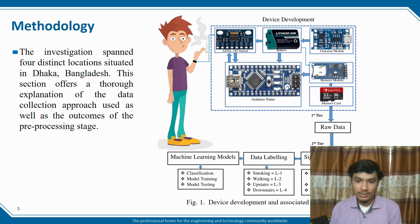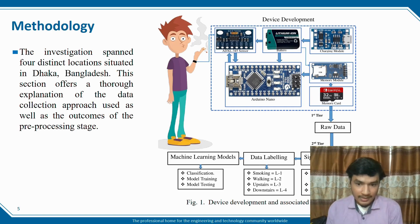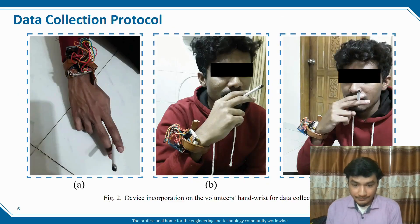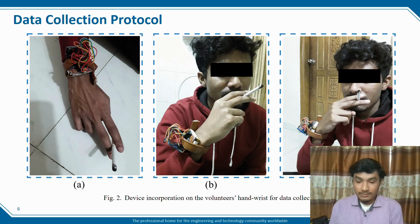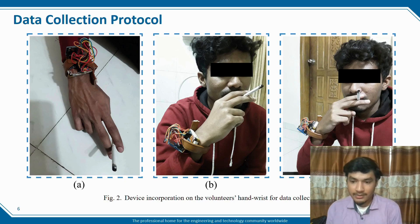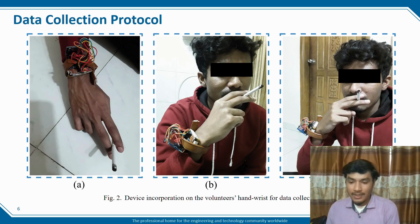For the data collection protocol, a volunteer wore our device on the right hand wrist and provided four types of data: smoking, walking, upstairs, and downstairs. The volunteer age is 32 ± 6 years. Data collecting duration is 6 ± 2 minutes, and sampling frequency is 100 Hz.